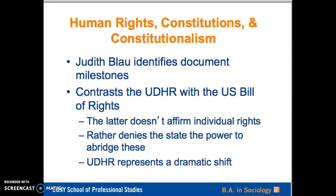The article by Judith Blau identifies milestones in the creation of documents designed to protect human rights. She contrasts the Universal Declaration of Human Rights — the 1948 Declaration — with the United States Bill of Rights. The latter, that is the U.S. Bill of Rights, doesn't affirm individual rights, but rather denies the state the power to abridge these. Thus, the U.S. Bill of Rights affirms the limitations of state power.